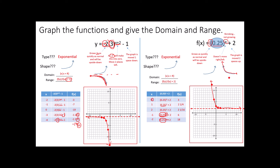That's kind of how this is going to work. When we're graphing, we want to start with those key characteristics — look at the function, let the function tell you what the graph is going to be, so you're not just blindly sticking in random points.